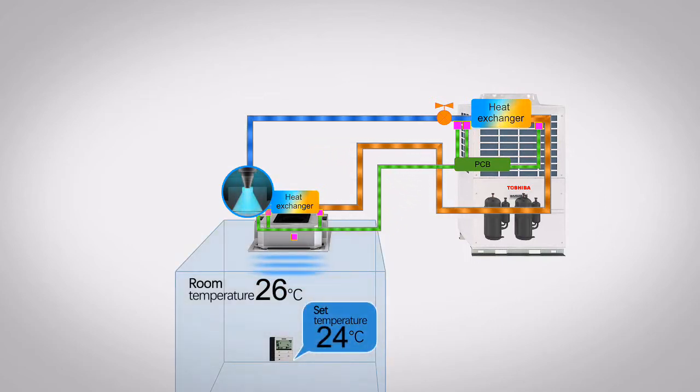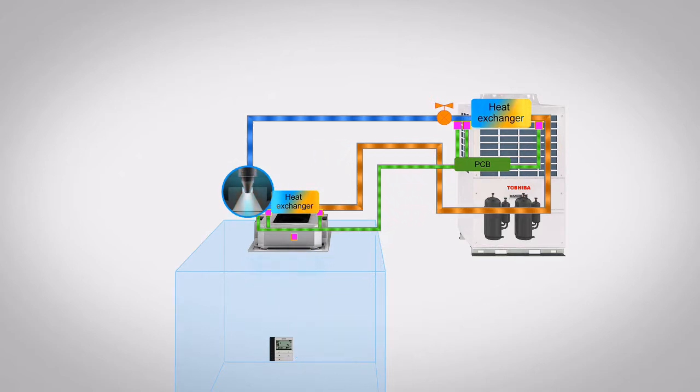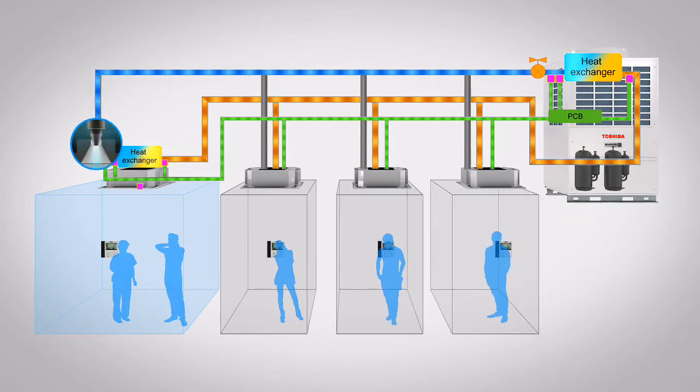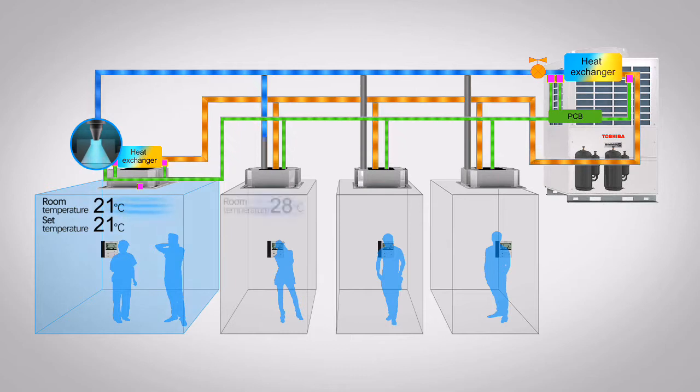As the number of indoor units within a system increases, so does the complexity of the control. To maximize energy efficiency, it is essential that each VRF system should precisely identify the optimal flow of refrigerant for each of the connected indoor units.